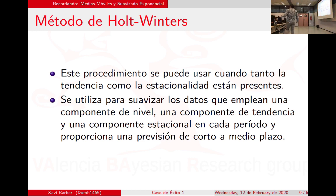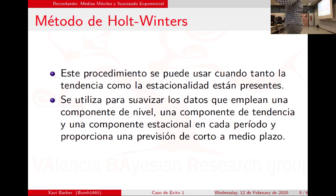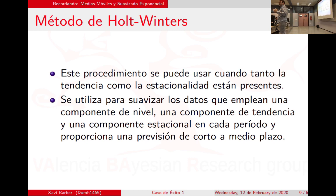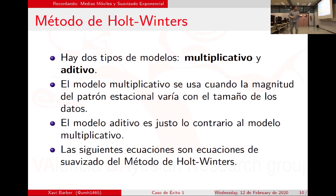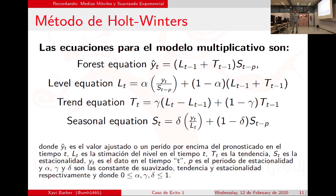Y por último, el que lo contiene todo: ¿podemos siempre utilizar Holt-Winters para ajustar cualquier serie y que salga el alfa, el gamma, el beta, los que tengan que salir? Los que no hagan falta saldrán cero. Con los ordenadores de hoy en día tardará a veces más en buscar la solución porque tiene más parámetros que estimar, pero con los ordenadores actuales prácticamente nos da igual.